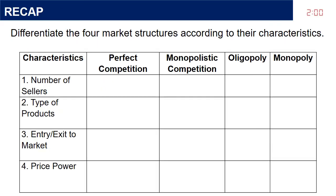Let us check if you still remember our lesson last time. Differentiate the four market structures according to their characteristics: 1. Number of sellers. 2. Type of products. 3. Entry/exit to market. 4. Price power.